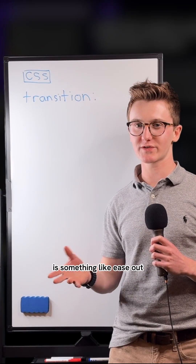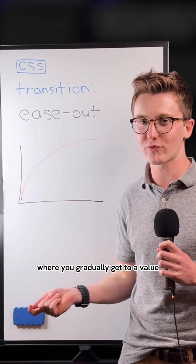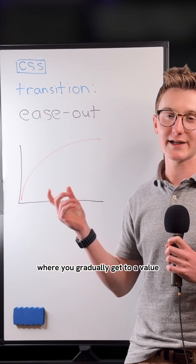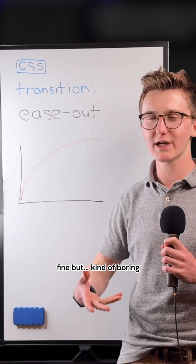A normal transition is something like ease-out, where you gradually get to a value. It's fine, but kind of boring.